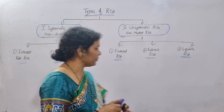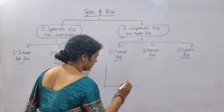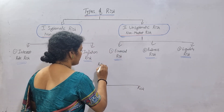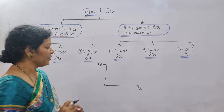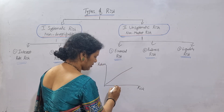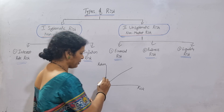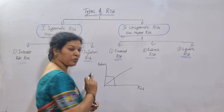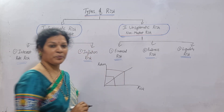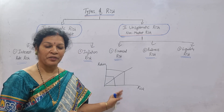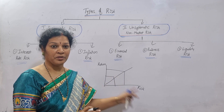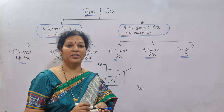I'll show you through a graph. We are taking risk on the x-axis and return on the y-axis. If you take more risk, you get more returns. When both are meeting at one place, risk is this much and return is also this much. If you take more risk, return is also more — same like demand and supply. Risk and return both are interlinked.